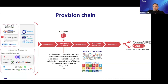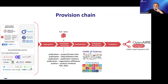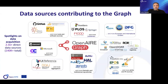We then enrich by inference, propagating information and metadata from one object to another where a relationship allows it. Finally, we finalize and publish to the public via APIs and dumps.